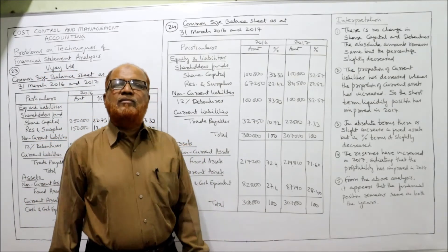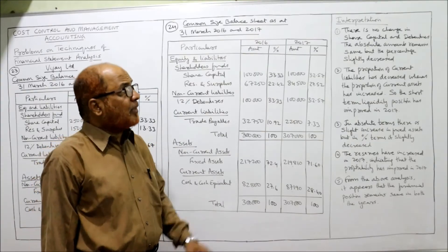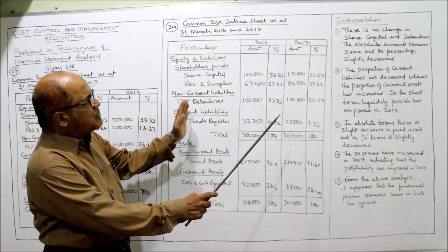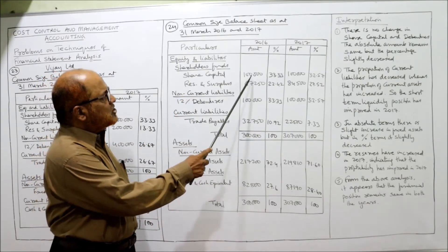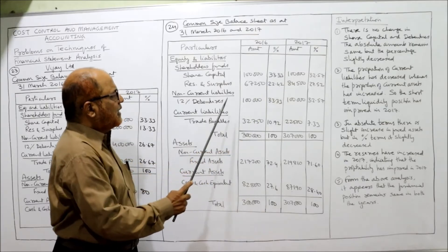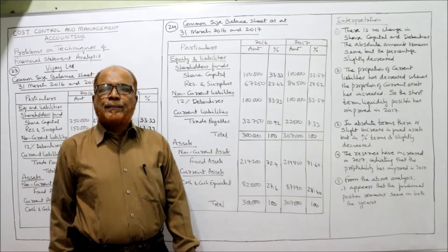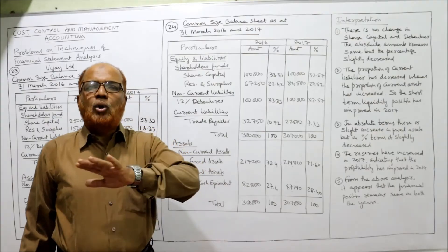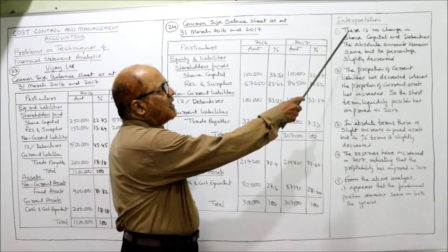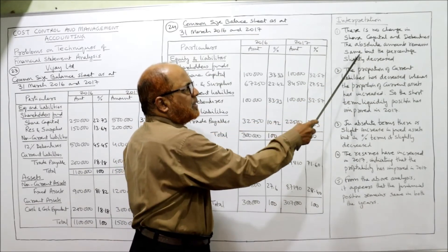Now it is asking you to give the interpretation also. How to give the interpretation? Observe carefully: there is no change in share capital — last year share capital 1 lakh, current year share capital 1 lakh. Debentures: last year 1 lakh, current year 1 lakh. That means during the current year no shares are issued and no debentures are issued, so there is no change in share capital or debentures.